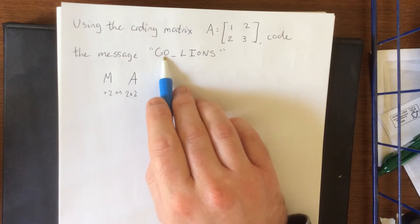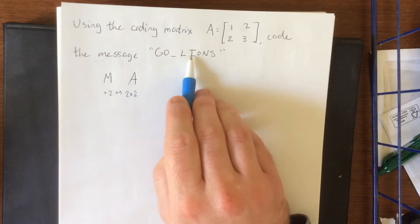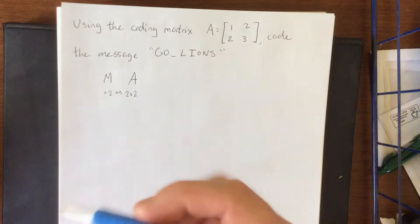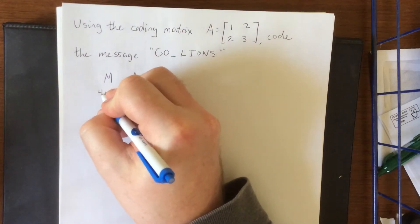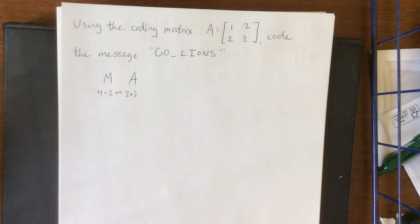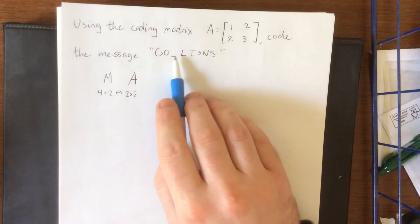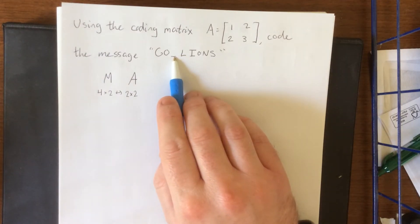So 1, 2, 3, 4, 5, 6, 7, 8. So 8 total, that'll fit within a 4x2. So 4x2 will have 8 entries and they will all be used for Go Lions. Do keep in mind that the space needs to be an entry in here as well.